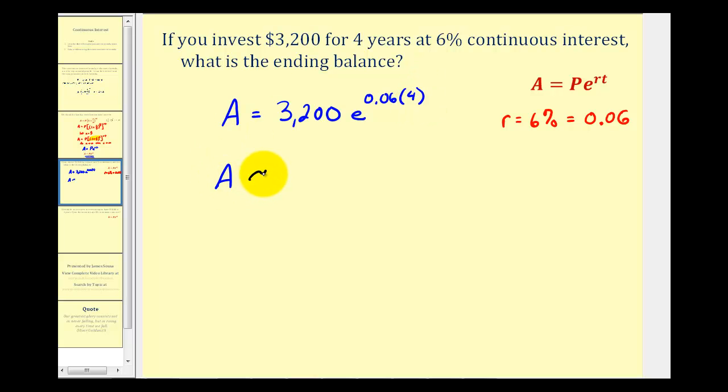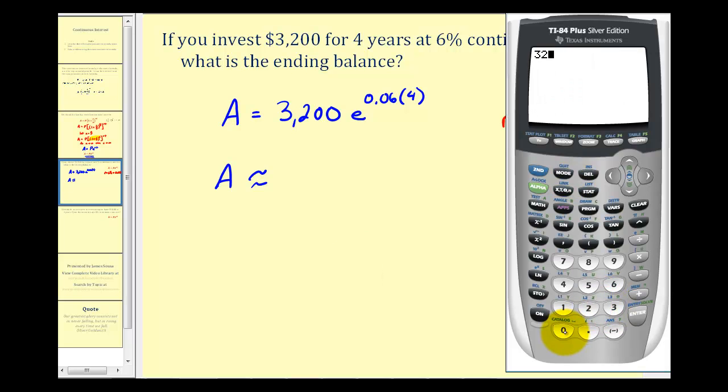And now we go to the calculator to get a decimal approximation. We have 3,200. We press second ln, or second natural log, that brings up e raised to the power of. We have 0.06 times four. If we round this to the nearest penny, we would have approximately $4,068.